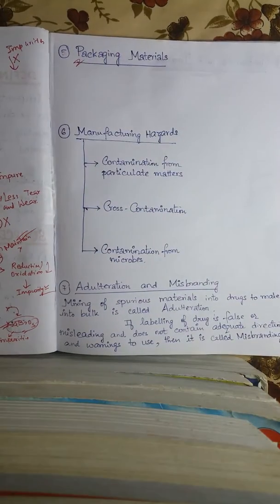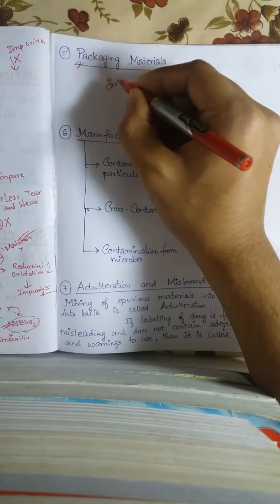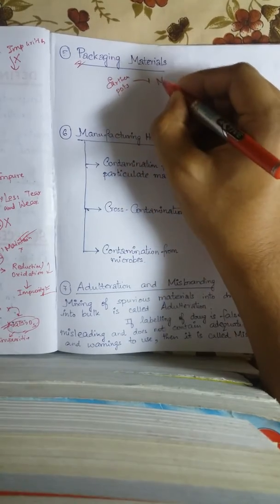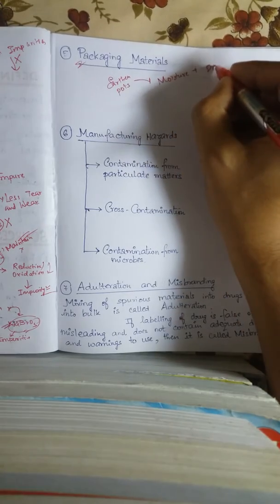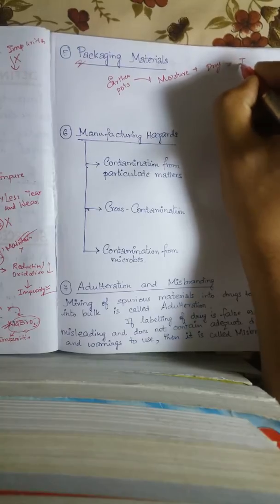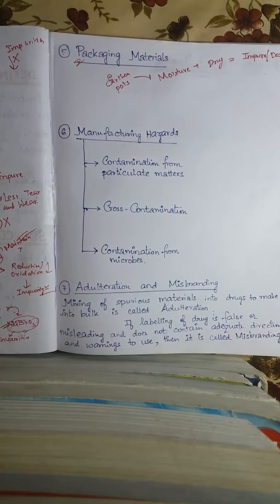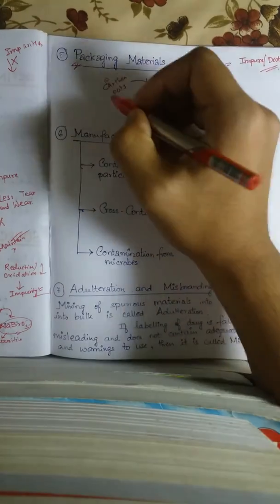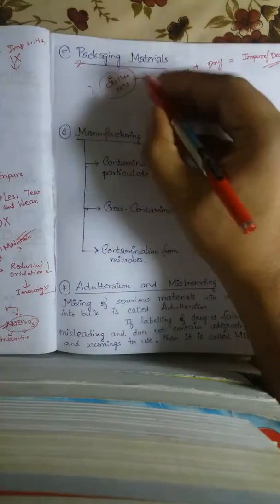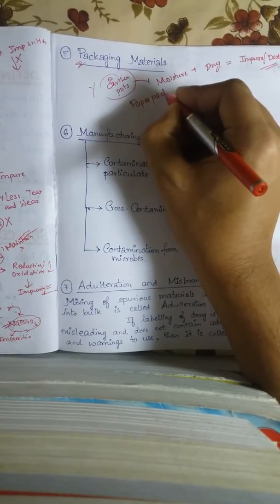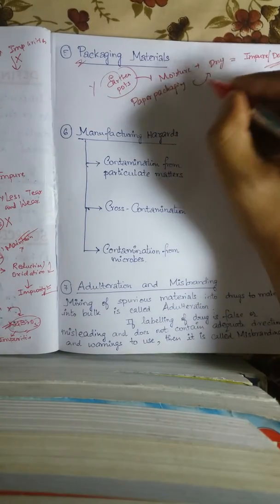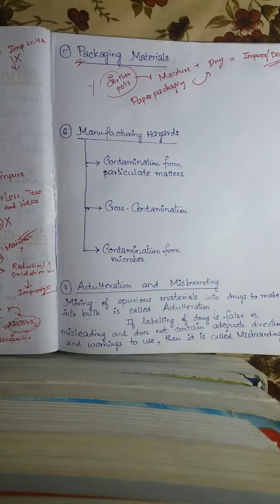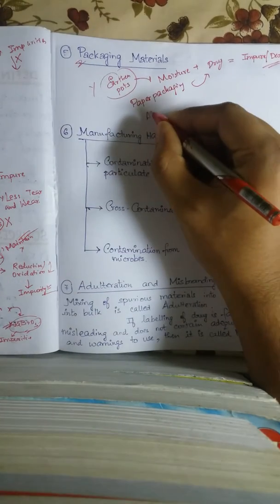What is packaging material? In the early days, medicines were kept in earthen pots. However, earthen pots were not effective and were eventually no longer used. Then came paper packaging — the drug was stored in paper. But this problem was not fully solved either, as paper packaging is not effective in preventing the combination of drug and moisture.